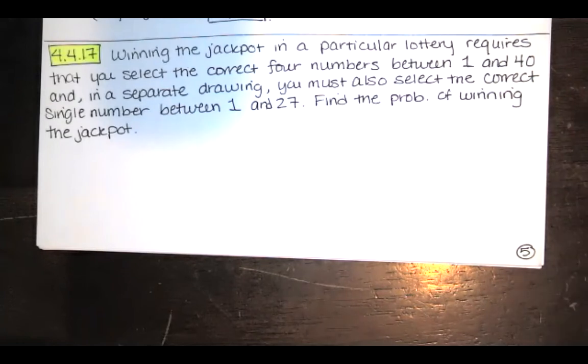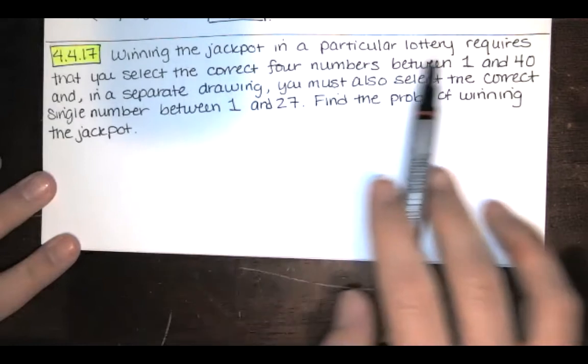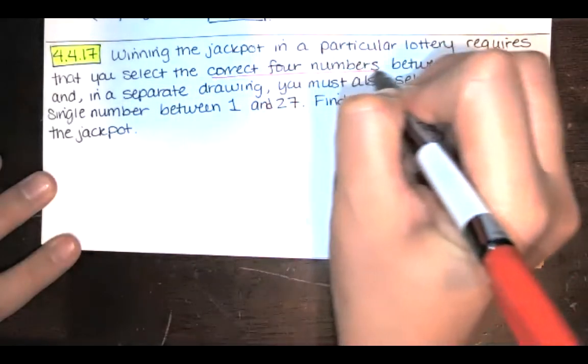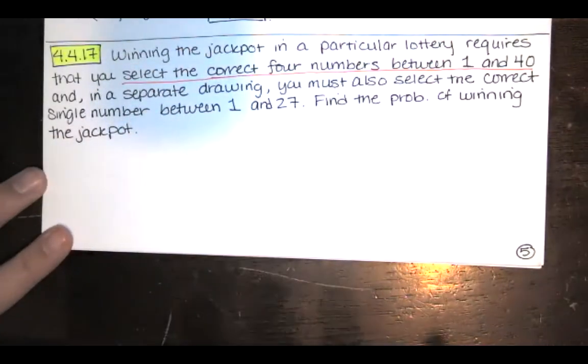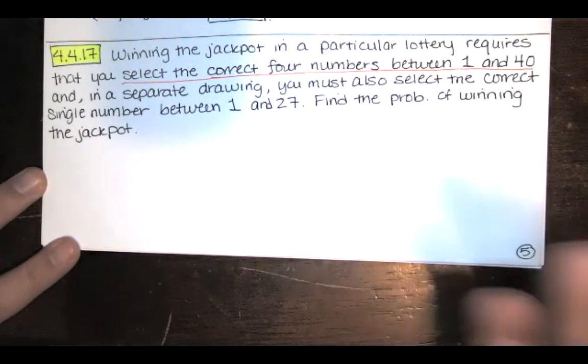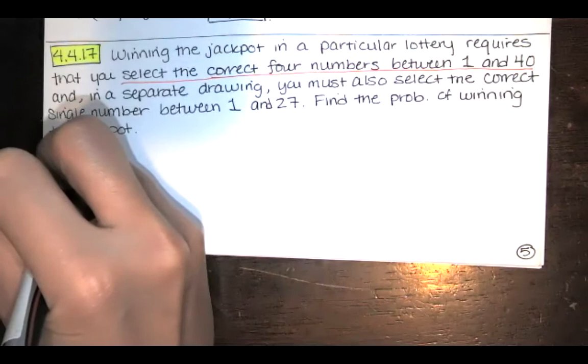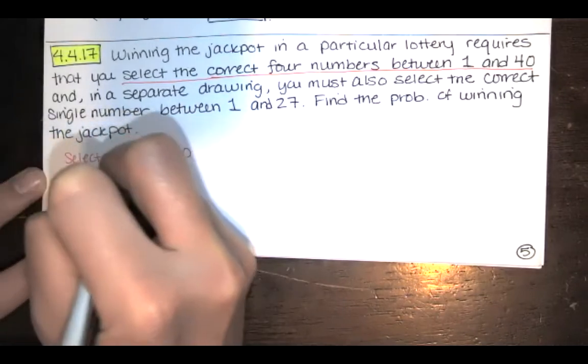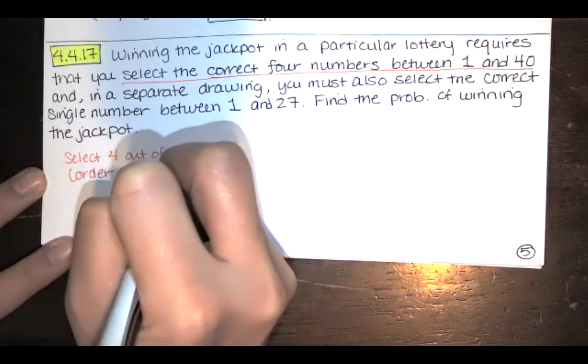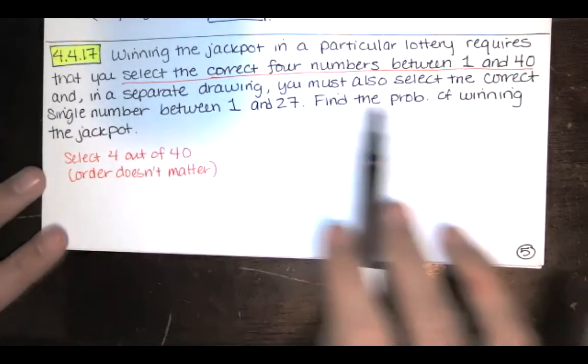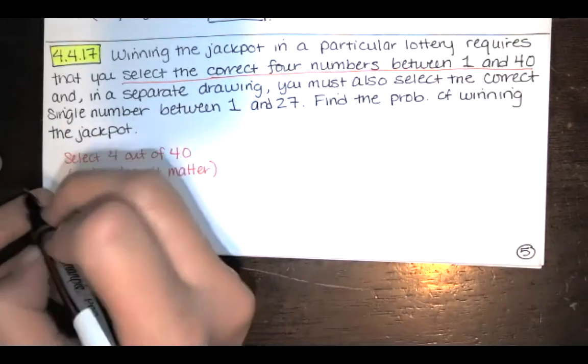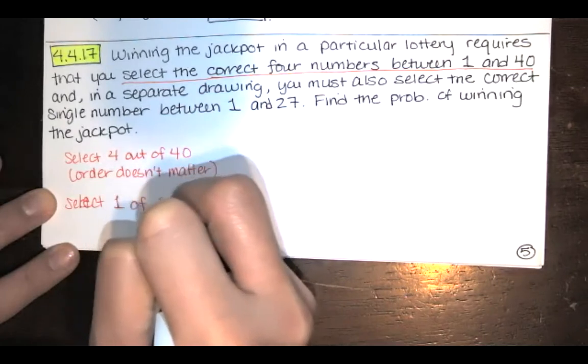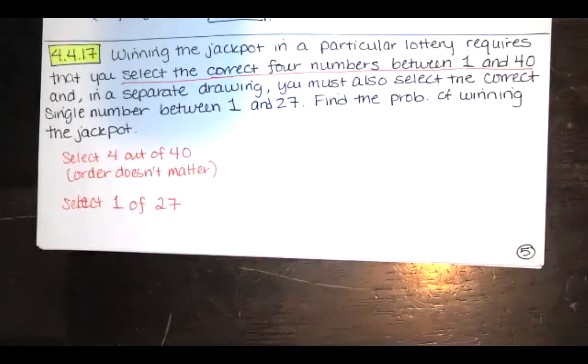Let's look at this first part of the statement. It says winning the jackpot requires you to select the correct four numbers between 1 and 40. So we're selecting four numbers from 1 to 40 and the order wouldn't seem to matter if you're talking about a lottery. And then in a separate drawing you must also select the correct single number between 1 and 27. And you're doing both at the same time. That's why this requires the multiplication rule.